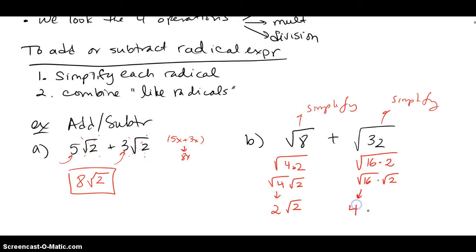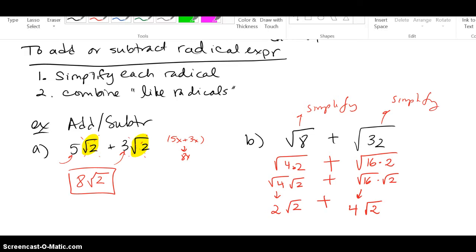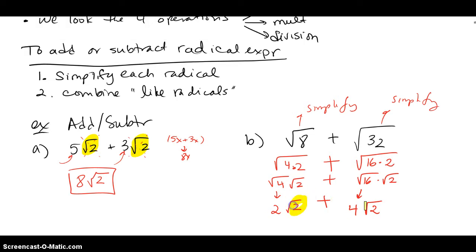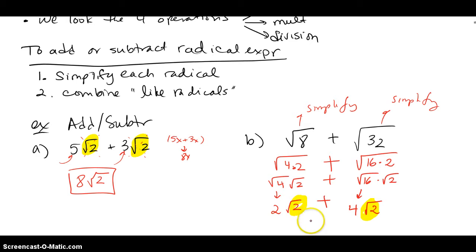I'm adding these two and, since these are like terms — just as before — I have 2 radicals that are the same. So all I have to do is add the coefficients, and that gives me 6√2.